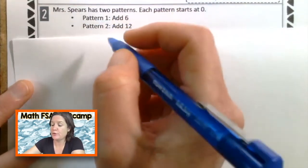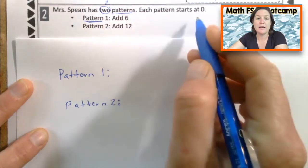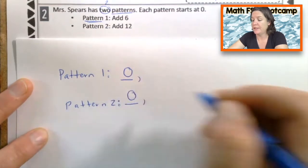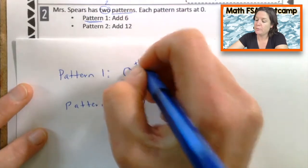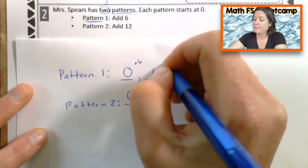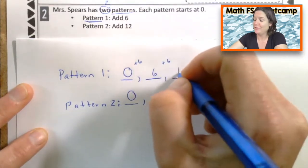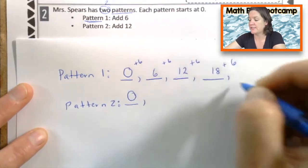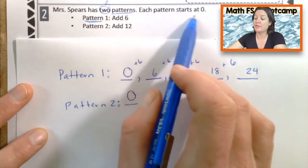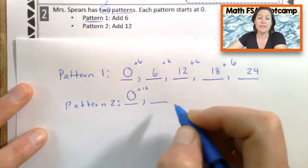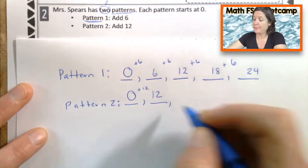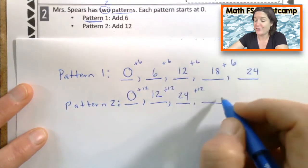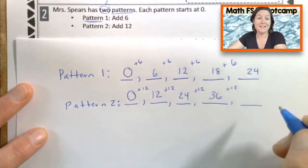So Mrs. Spears has two patterns, pattern one and pattern two. Each pattern starts at zero. So the very first term in each, the corresponding terms, there will be zero. All right. Let's throw the rules on them now. So pattern number one says add 6. So zero plus 6, the next term would be 6. Six plus 6, the next term would be 12. 12 plus 6, the next term would be 18. Let's do one more. We might have to put more in. We'll see what the question's asking us to do. 24. Pattern number two, it says that the rule is to add 12. Remember this one starts at zero as well. So now we're adding 12. What is zero plus 12? 12. 12 plus 12 is 24. 24 plus 12 is 36. Let's do one more. 36 plus 12 is 48.